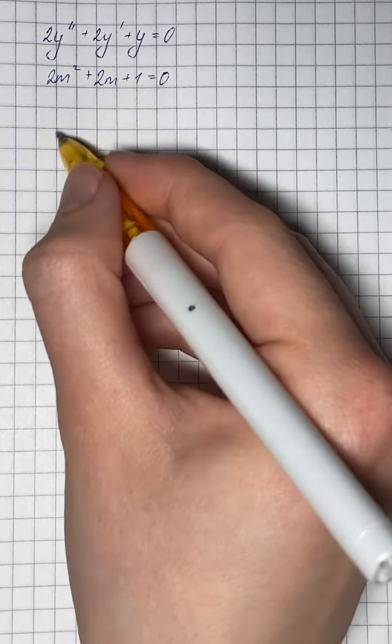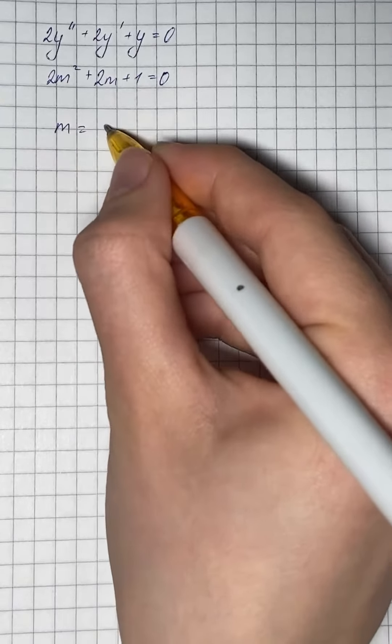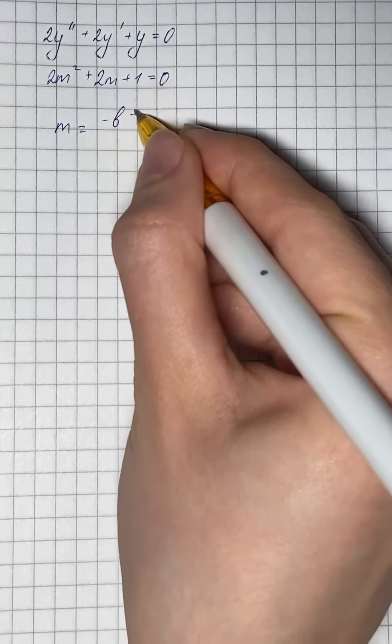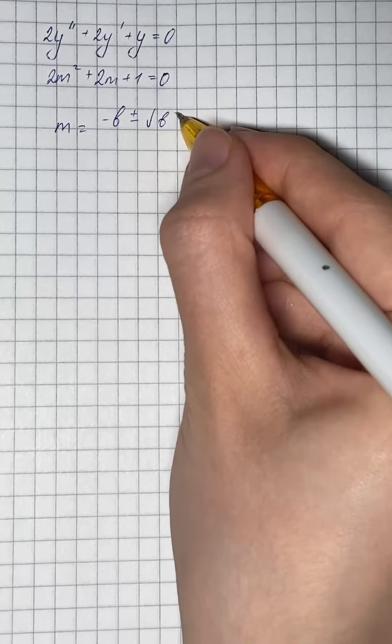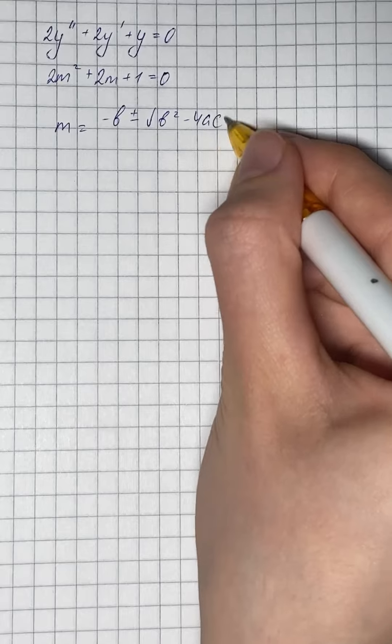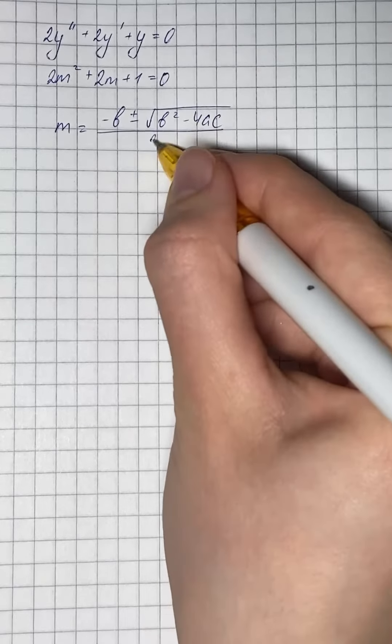Now we're going to use the quadratic formula, which looks like m equals negative b plus or minus square root of b squared minus 4ac, all over 2a.